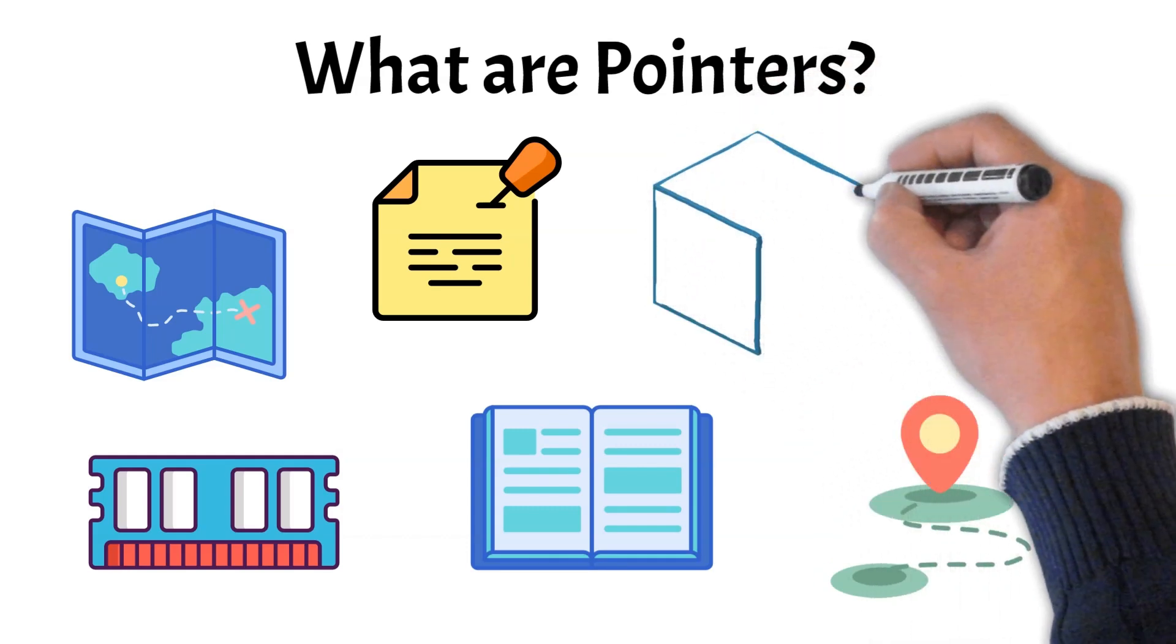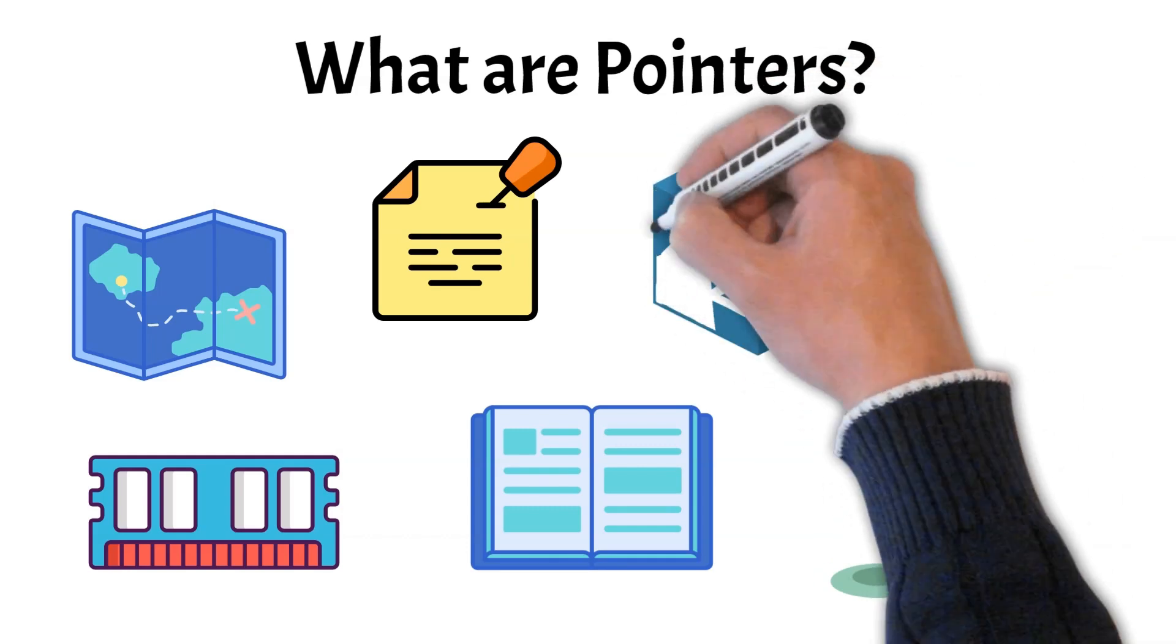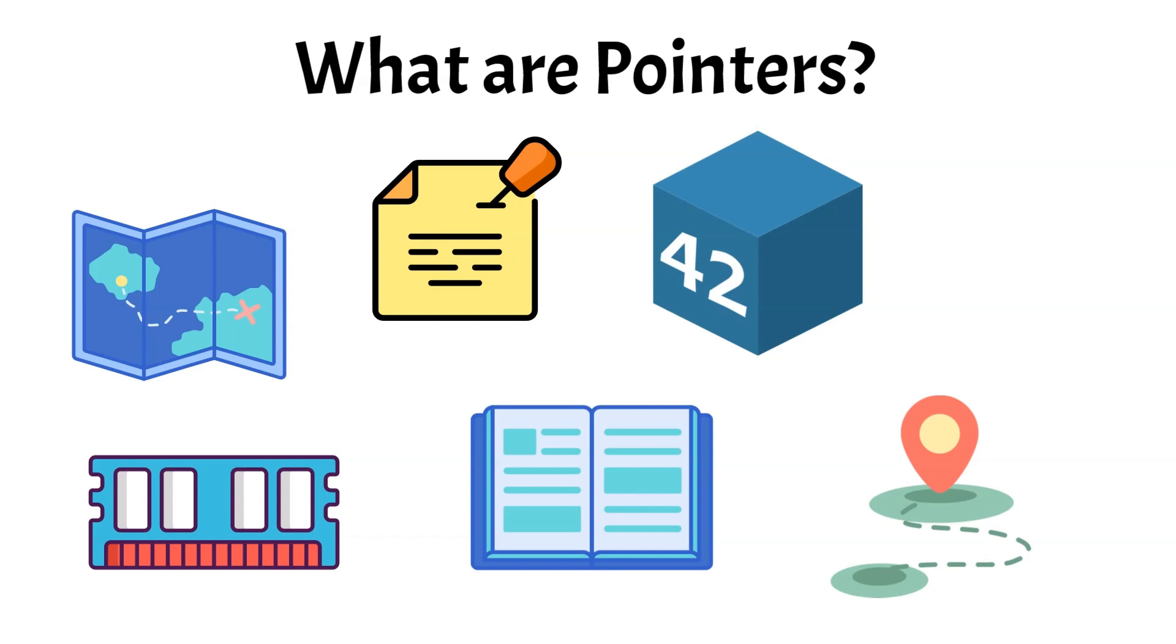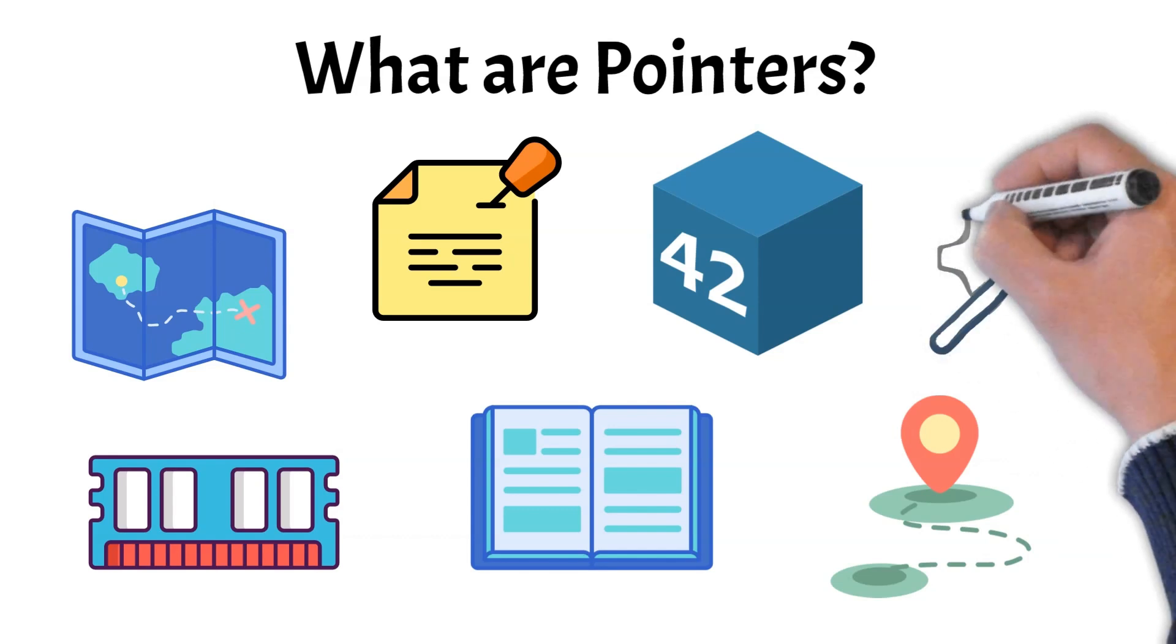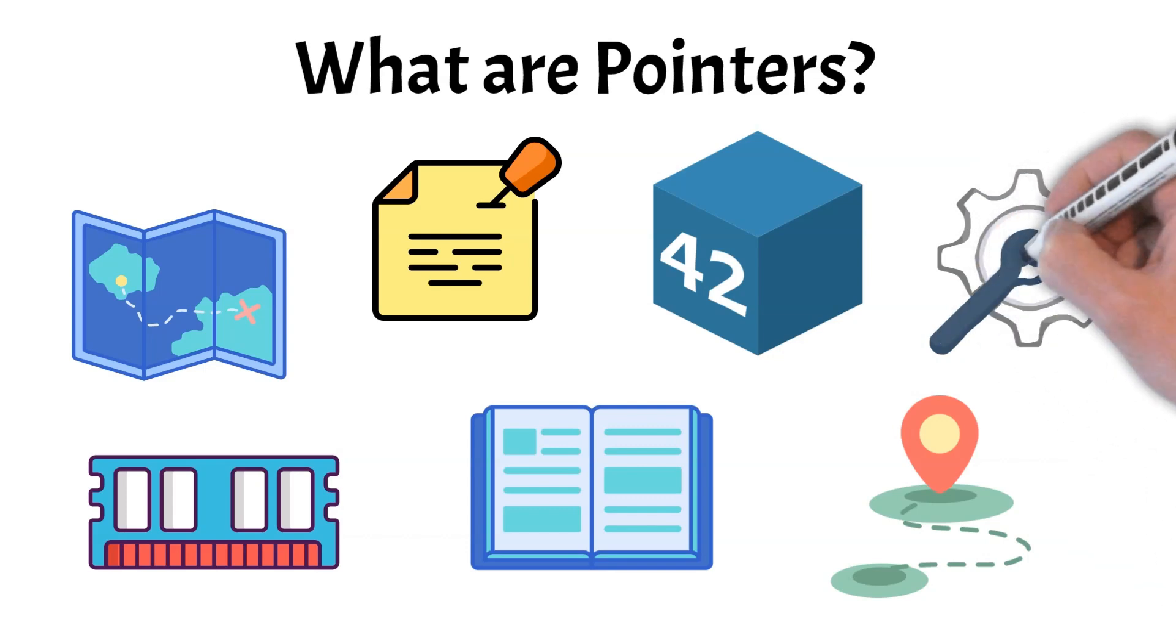a pointer keeps track of the memory address where a variable's value is stored rather than holding the value itself. For example, if you have a variable that stores the number 42, a pointer can point to the memory address where 42 is located. This means that instead of working directly with the number, you can use the pointer to find and manipulate the value.